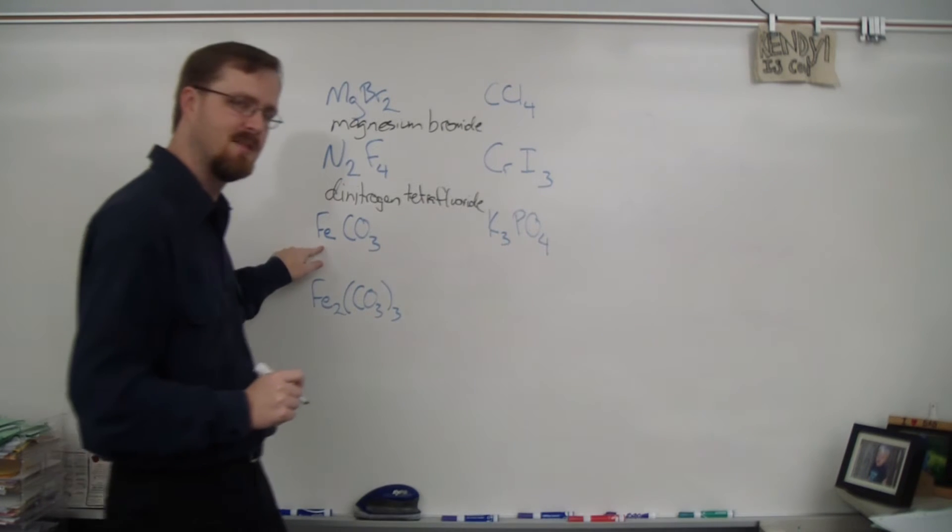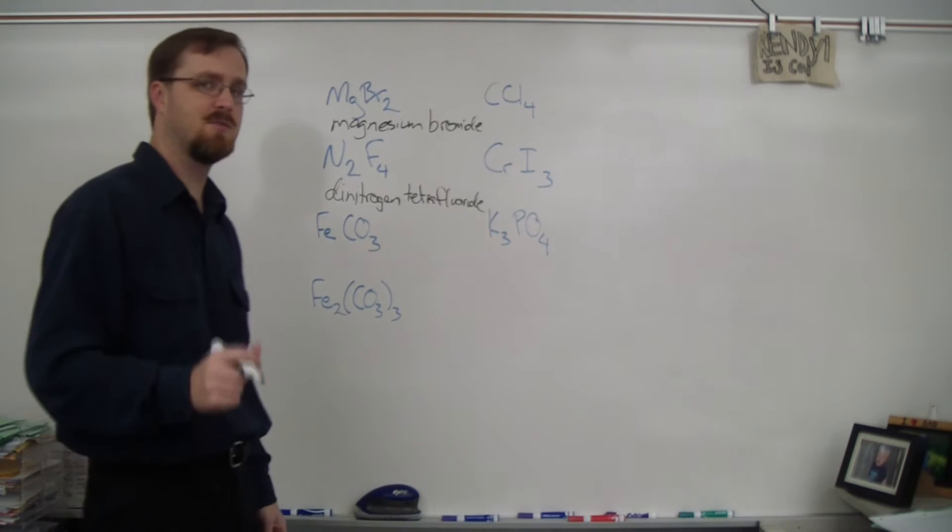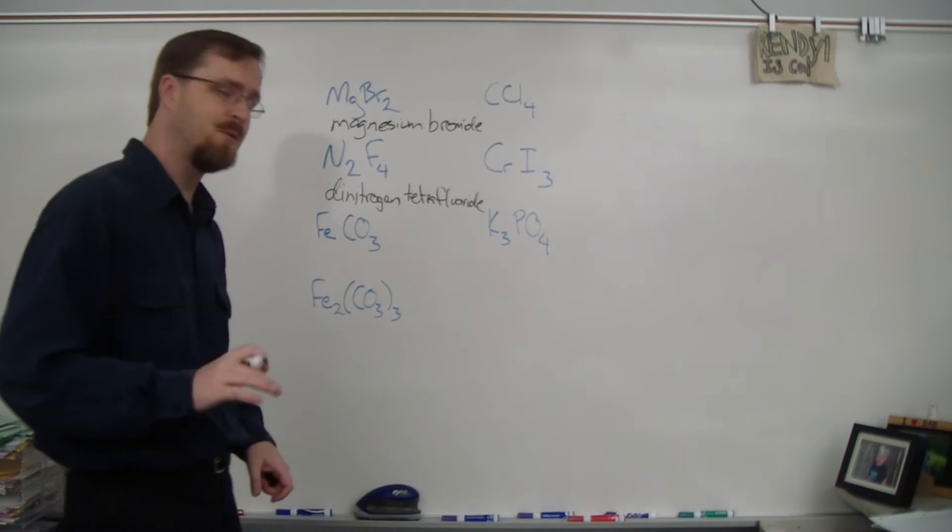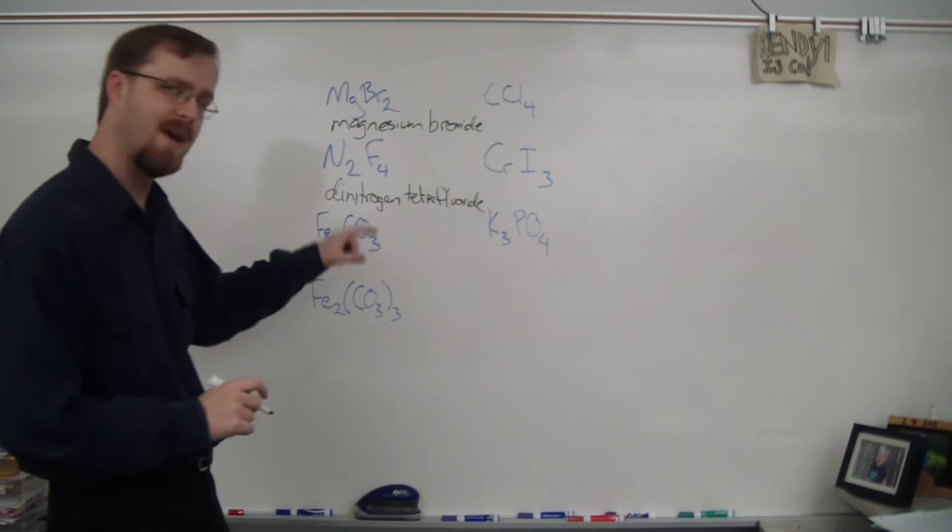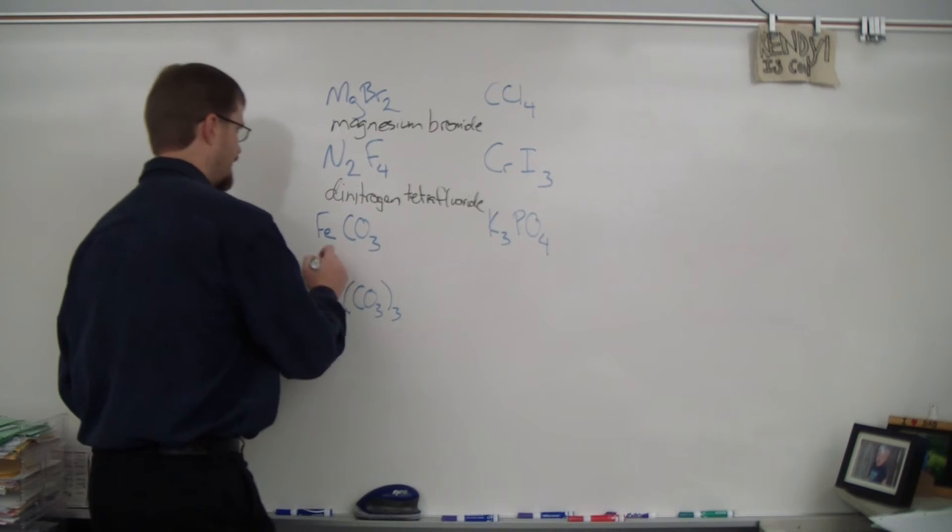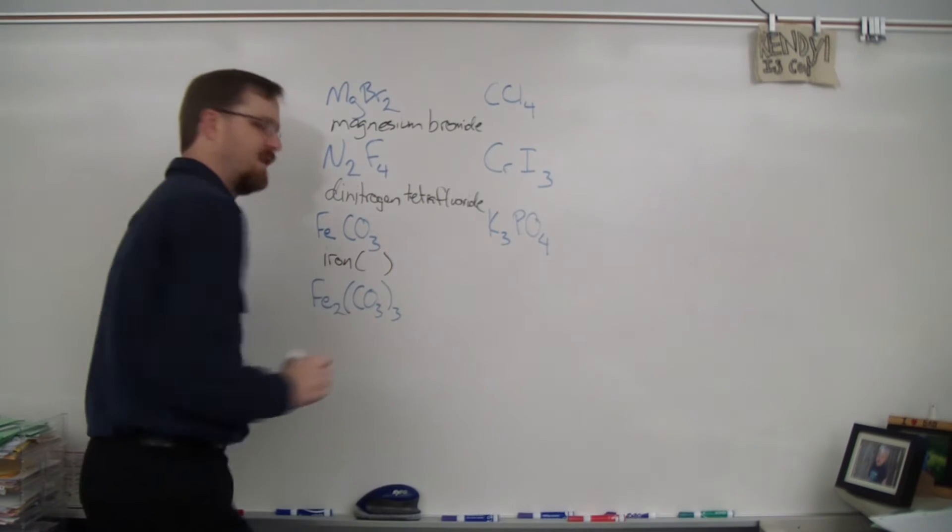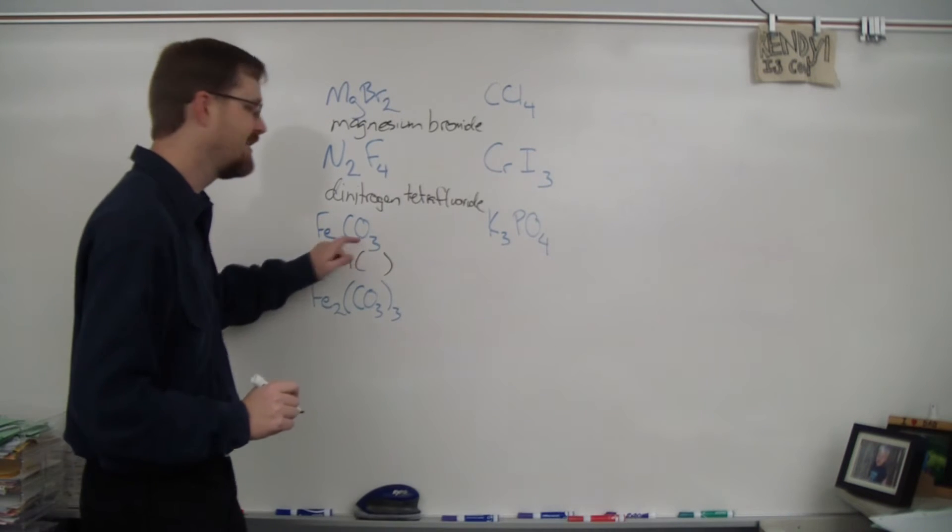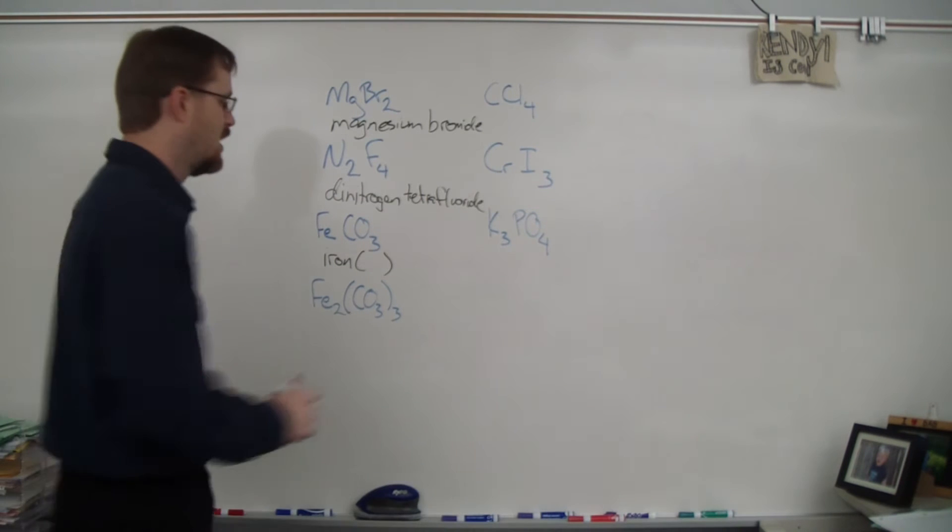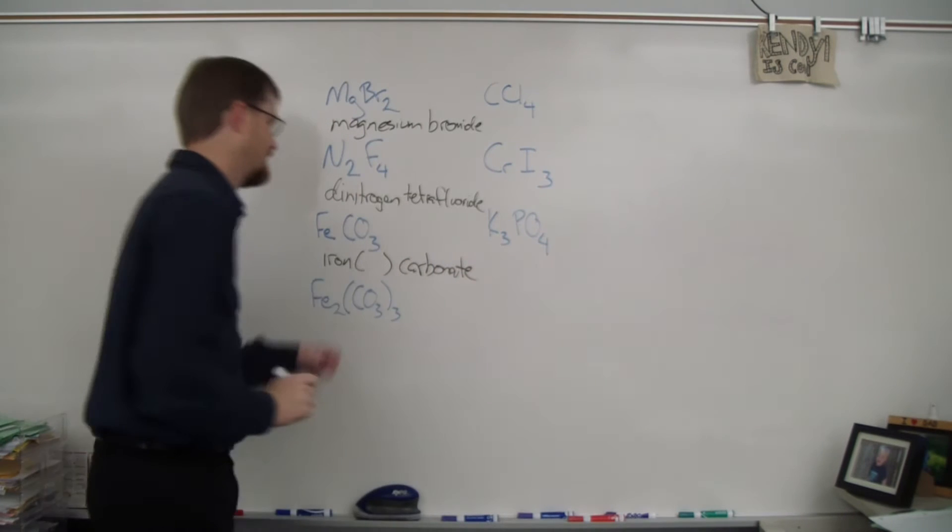Alright, next one. FeCO3. Is the first element a metal? Well, iron is definitely a metal. And is it a transition metal? Yes it is, which means we need to use the Roman numerals. So what I'm going to do is I'm going to write the name as I see it, leaving a space for the Roman numerals. So Fe is iron. I'm going to put a set of parentheses to fill out a Roman numeral later. And then CO3 is one of those polyatomics that you guys got to remember. CO3 is carbonate. Here we go. Iron something carbonate.